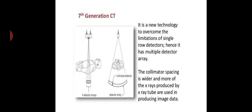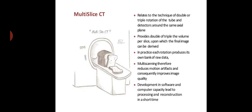Now let us talk about the seventh generation CT. It is a new technology to overcome the limitations of single-row detectors, hence it has multiple detector array. Collimator spacing is wider and more of the x-rays produced by the x-ray tube are used in producing image data. Multiple rows of detectors are used in seventh generation CT.